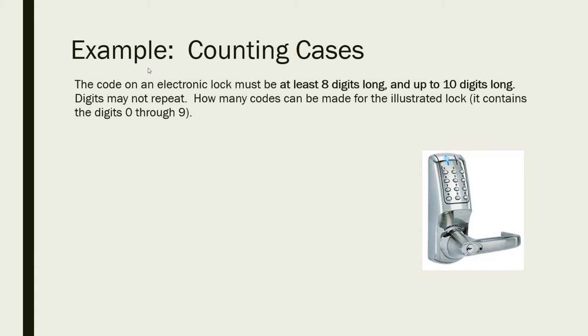So in this first example, we have an electronic lock, and I've illustrated it on the right. So we've got the digits zero through nine on that lock. And we're going to say that the code for this lock has to be at least eight digits long, but it could be up to 10 digits long. So we've got three different cases. This is a problem where the focus is going to be on counting cases, where one calculation won't be enough to solve the problem. We need to look at three cases. So our code could be eight digits long, could be nine digits long, or our code could be 10 digits long.